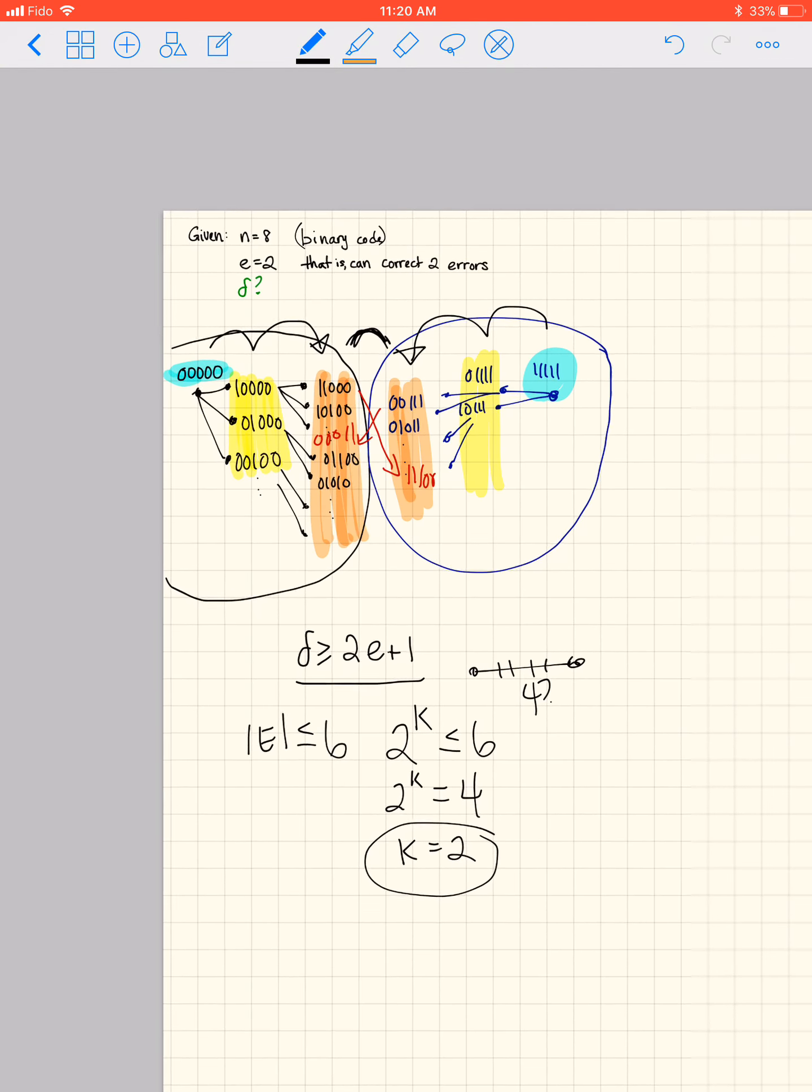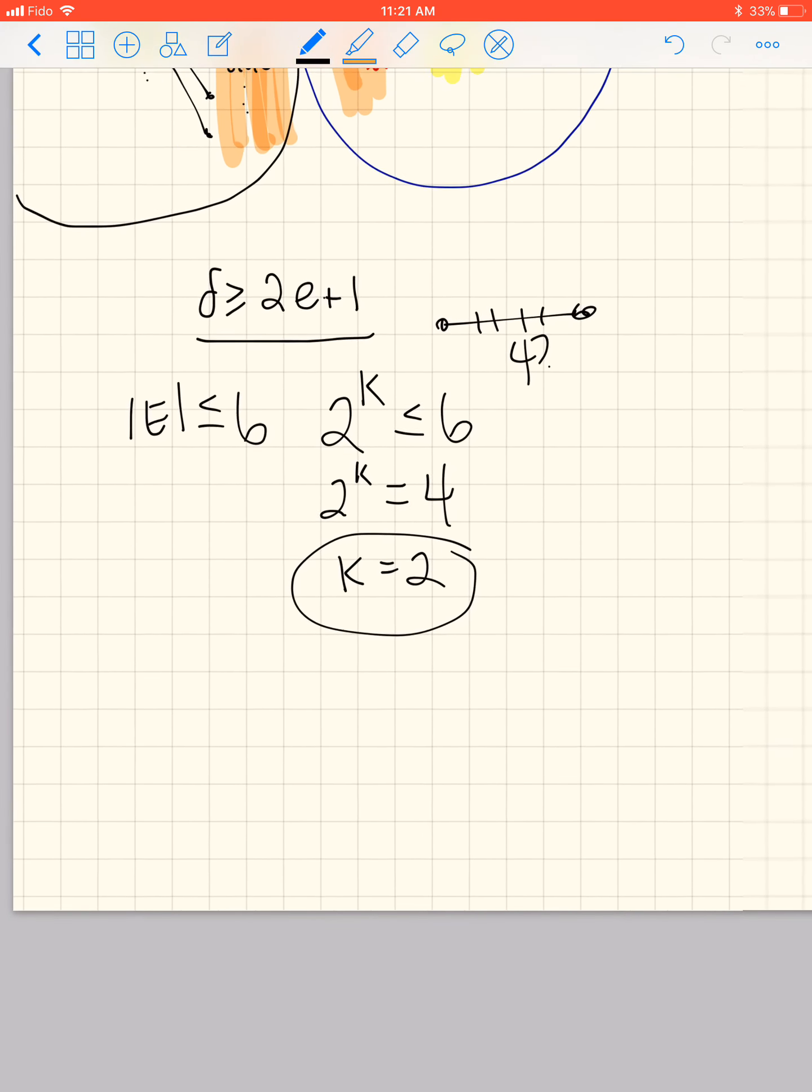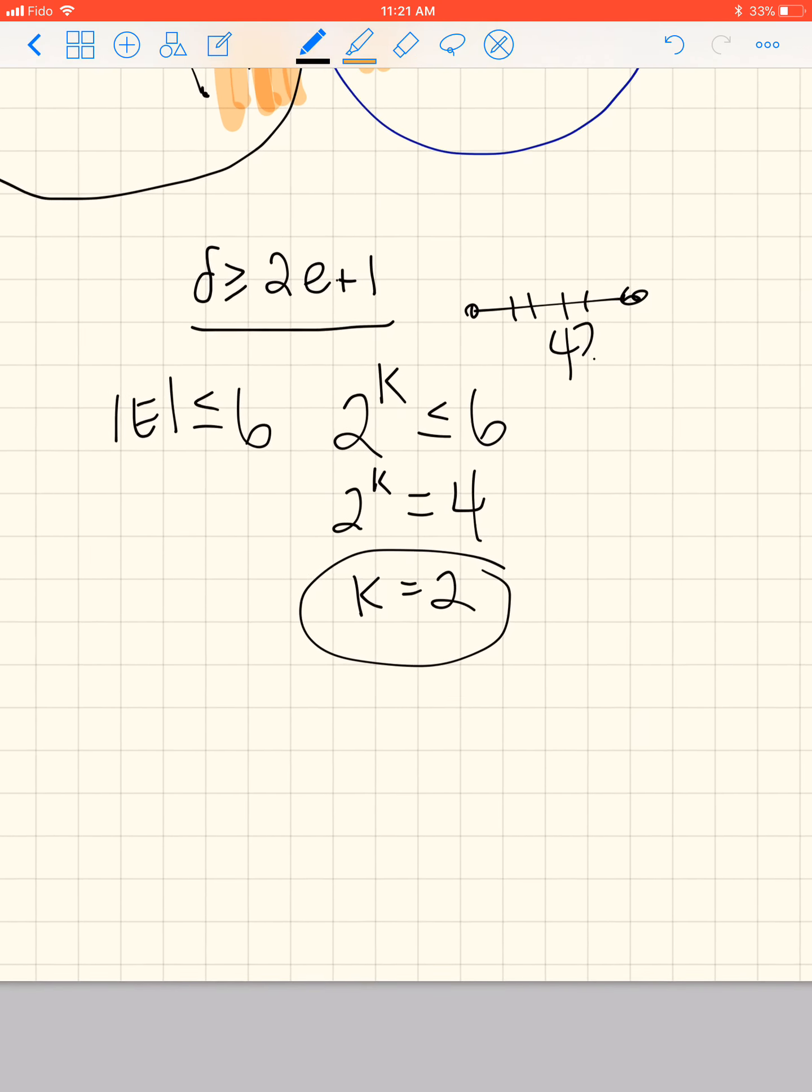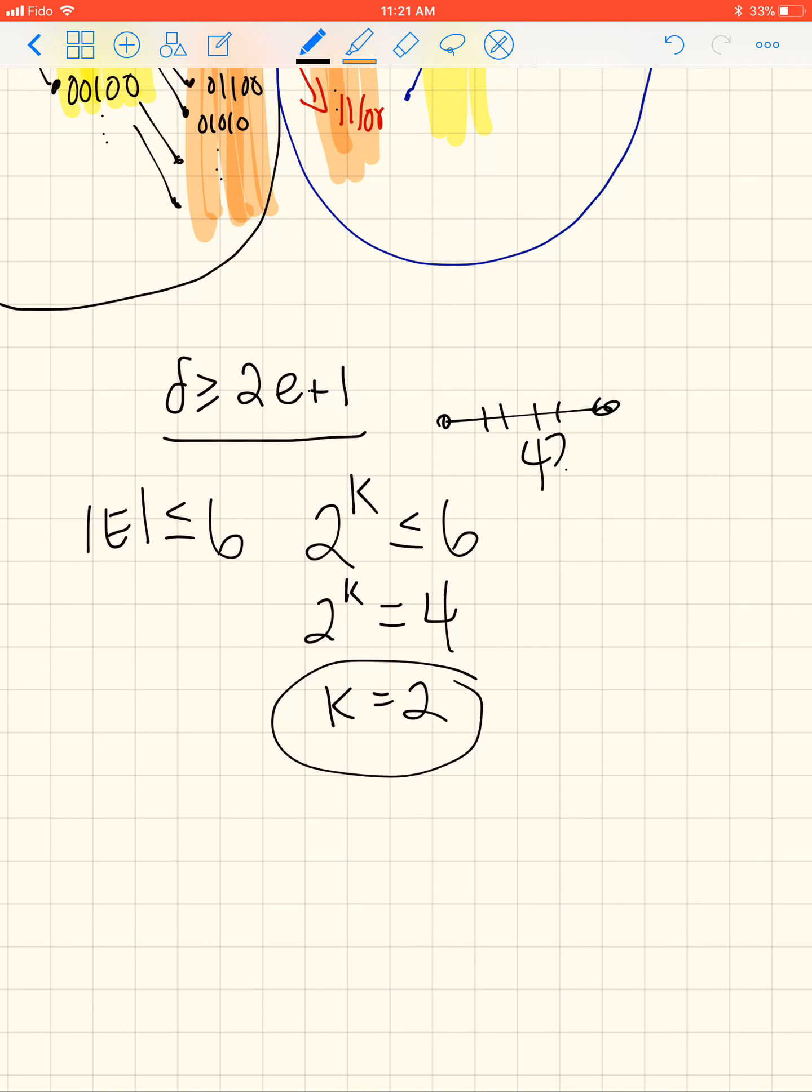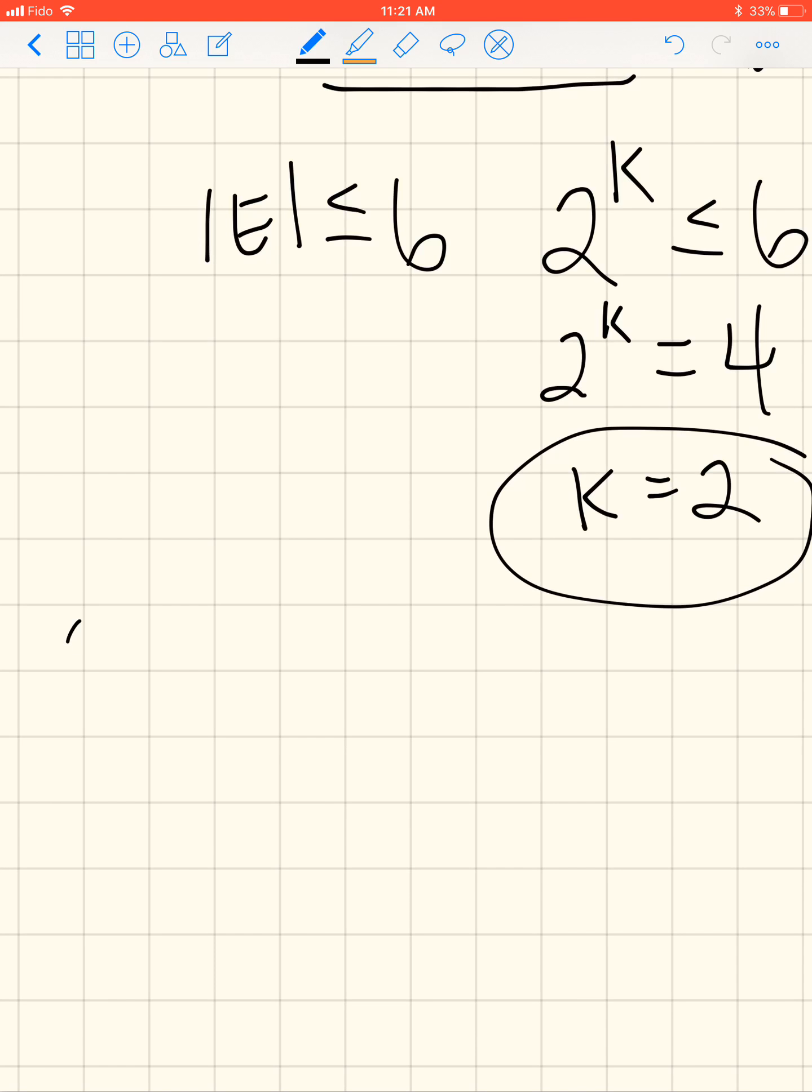Delta doesn't come into it. Delta is 5 as it happens, but delta being 5 helps us to actually construct the code, which is the last part of the question. So it's a linear code. Let's put 0, 0, 0, 0, 0, 0, 0, 0. Let's put that in as our code word.